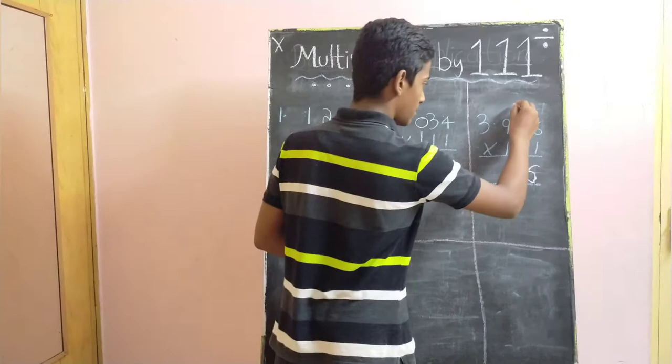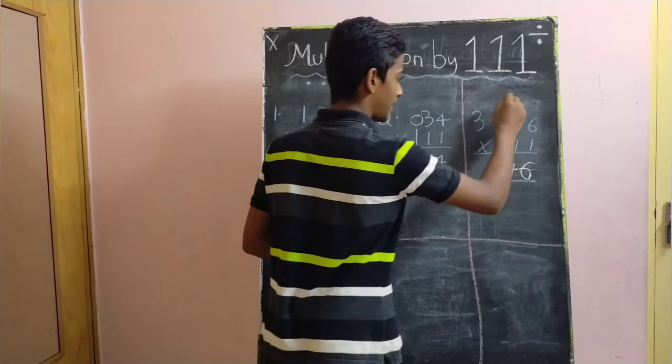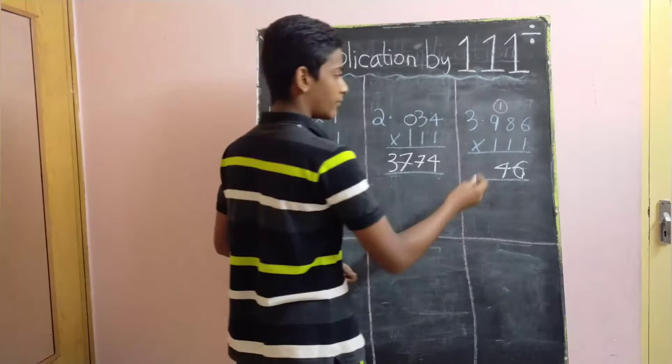Let's take a reminder. We have to write the reminder over here, which is 1. Then, we have to add 6 plus 8 plus 9 which gives us 23 and plus 1, 24.